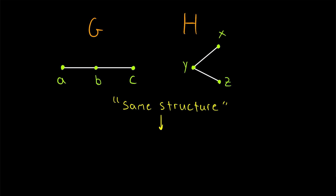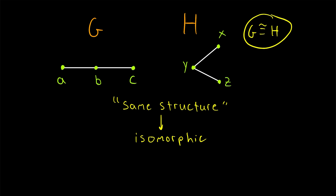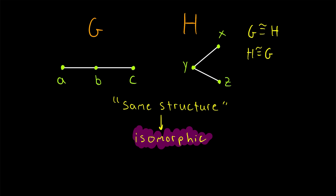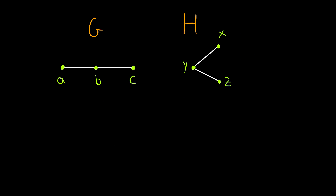The term we use for this relationship between two graphs is isomorphic, so we would say that the graph G is isomorphic to H, and we could write it like this. G is isomorphic to H, and this is a symmetric relation — we could also write that H is isomorphic to G. This seems like a pretty fundamental and basic idea of graph theory, one that we should definitely formalize, and that's what we'll be going over in today's lesson.